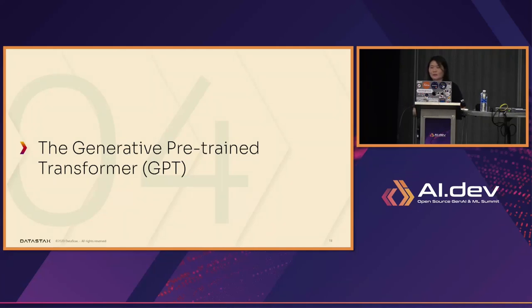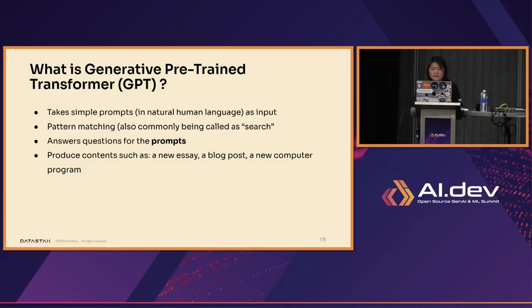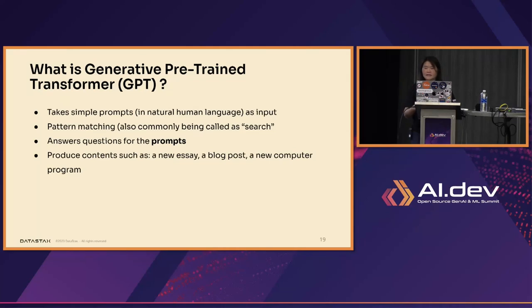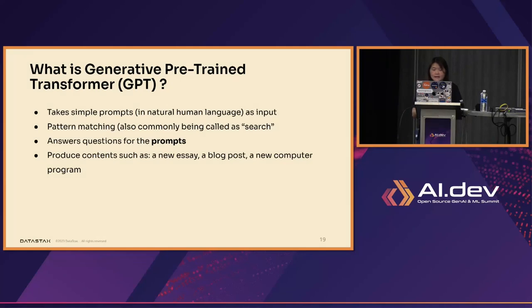GPT — Generative Pre-trained Transformer — such as ChatGPT: as the name suggests, it's a transformer. It takes natural human language as input — simple prompts — and if you're searching for text responses, it does similarity searches. Here at DataStax, we have Astra, which is based on Cassandra, and we have the capability of adding a vector data type that can help with similarity searches. GPT transforms and essentially answers questions based on the prompts, producing content like a new essay, blog post, a piece of music, or designing a new dress.